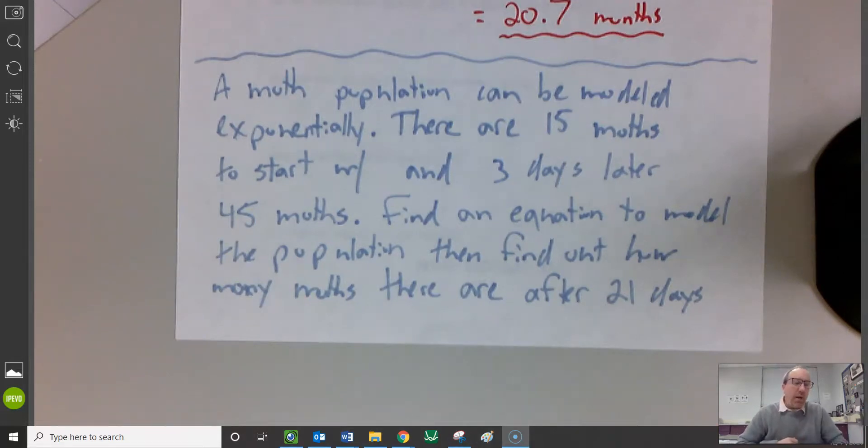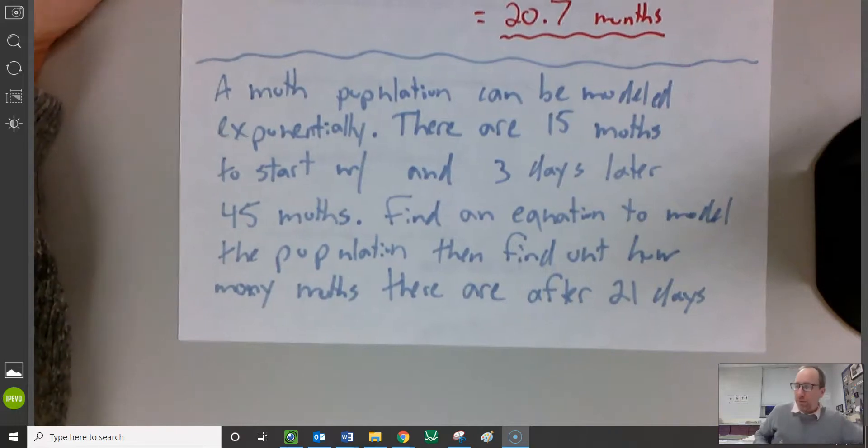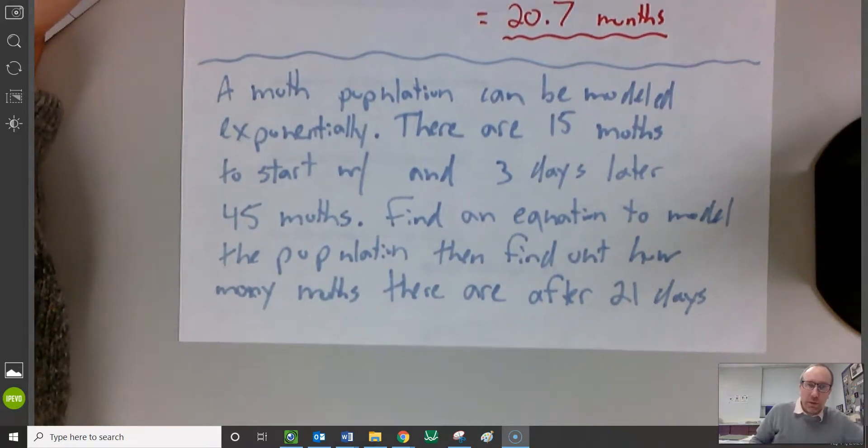This is a lot like some of the y = mx + b problems you guys used to do in Algebra 1 and Algebra 2. You would be given enough information to find the slope, and then once you found the slope, you would use it to extrapolate. And that's our word for like figure out what's happening in the future. That's what we're going to do here. I gave you enough information to find A and K, and then once you have A and K, you have the formula, and you can use the formula to predict something, to calculate something.